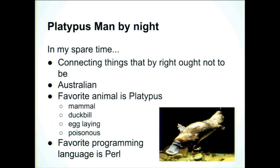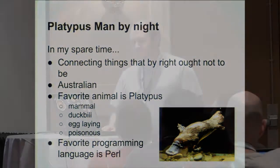In my spare time I enjoy connecting things that don't normally go together and I happen to be Australian. So my favorite animal is of course the platypus, since it is an aquatic mammal that has a duck bill. It lays eggs. And as I've been reminded recently, it's poisonous — as apparently all Australian animals are. And I love Perl more or less for the same reasons. It's kind of an odd animal.